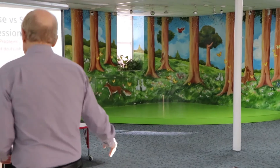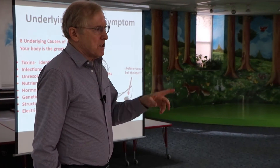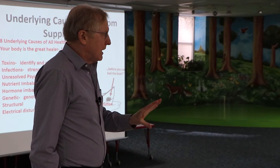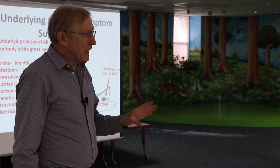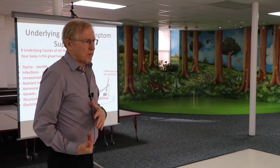Your immune system is not as strong without adequate oxygen. The number one most important nutrient in your life is oxygen — you don't live very long without it. The third underlying cause is nutrient imbalances or deficiencies, and this isn't just what you're eating — it's what you're eating and digesting and absorbing into your system.